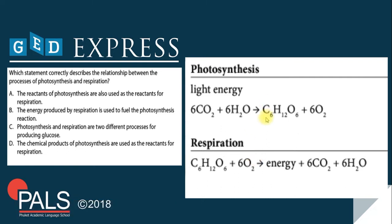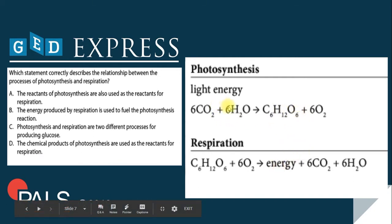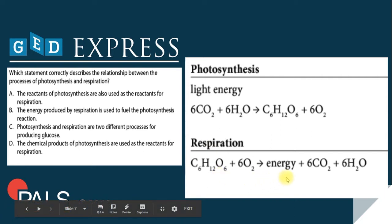Now let's go to letter B: the energy produced by respiration is used to fuel the photosynthesis reaction. I think this is the reverse. Photosynthesis does not produce energy — it produces glucose. The energy is not used in photosynthesis. Instead, the glucose produced in photosynthesis is what is used in respiration to produce energy. So letter B is absolutely wrong.